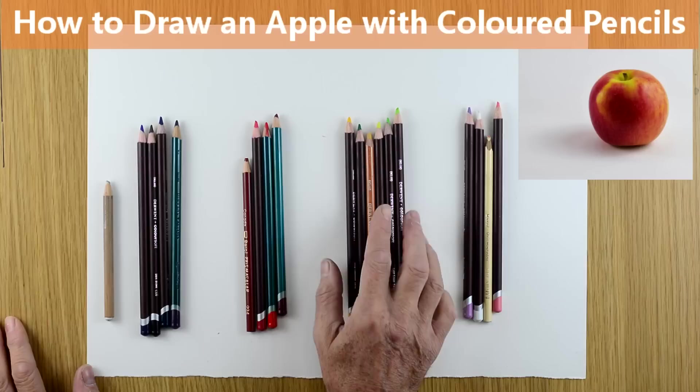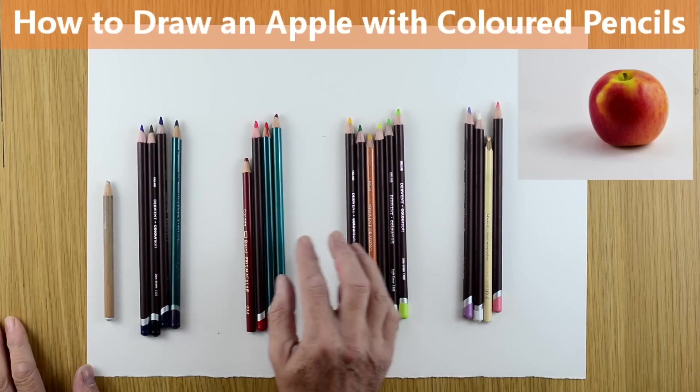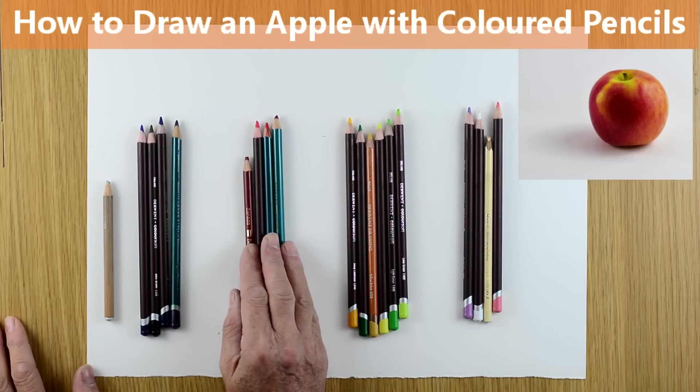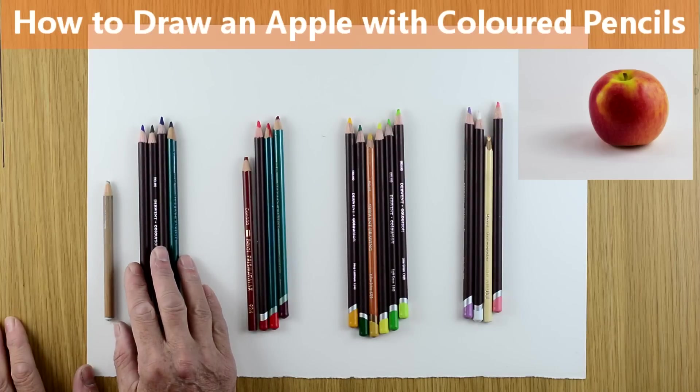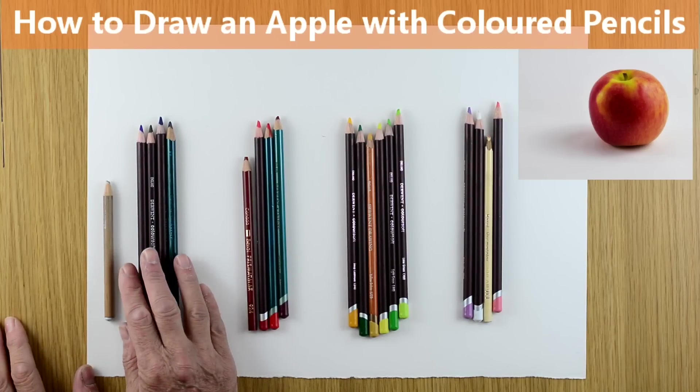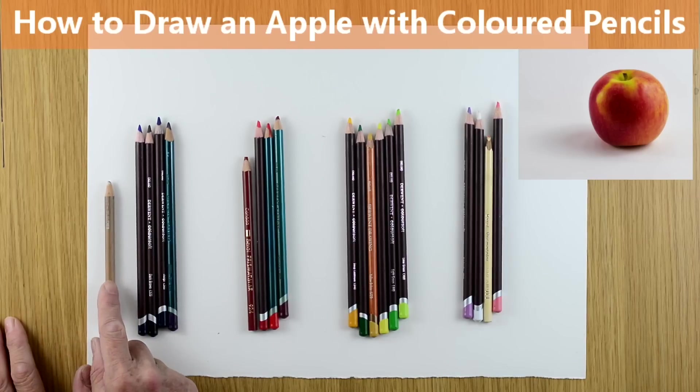The deeper oranges and yellows. I've then got the red tones here and you can see the various tones of red. My blues and purples and finally my blender for blending all the colors together.